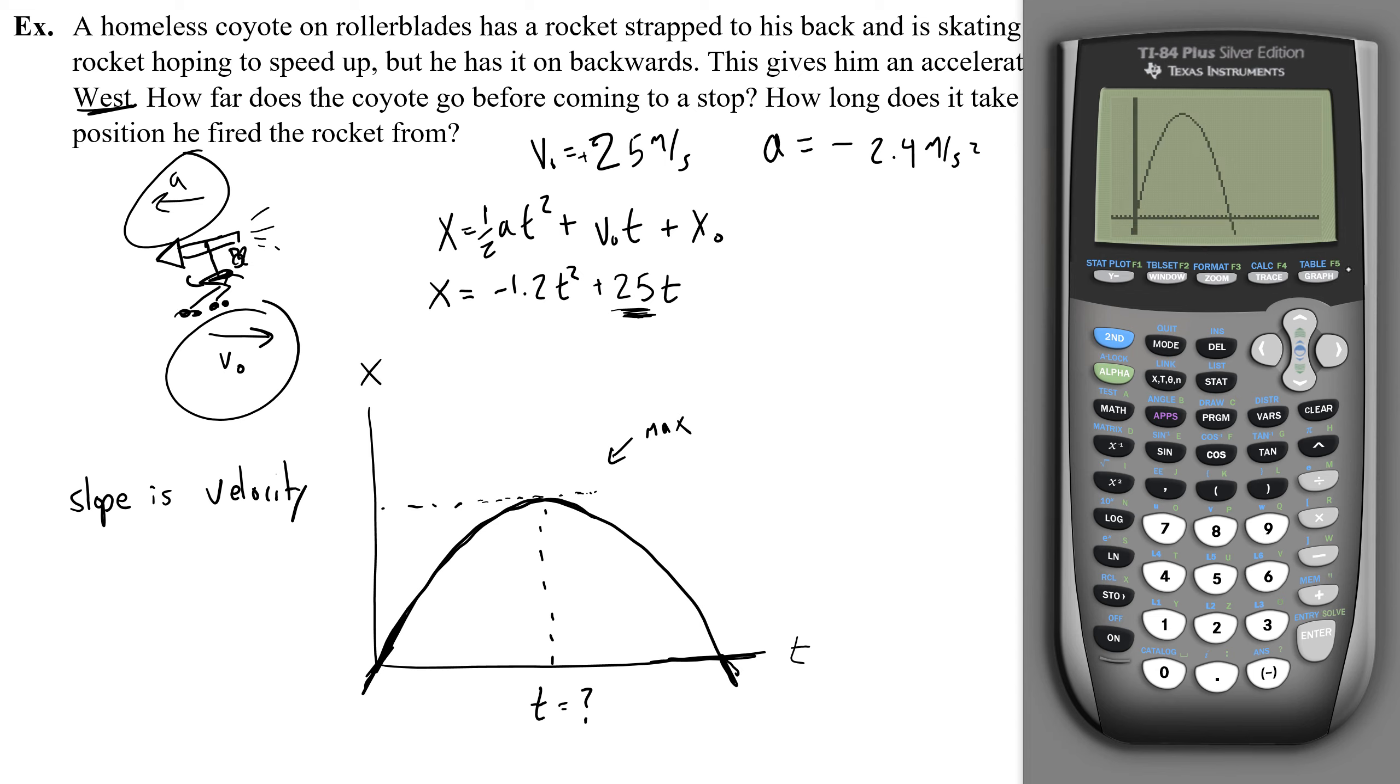So to find the maximum, you would go to second, trace, down to maximum. Okay, now you go to the left of where that maximum is, then to the right of that maximum. Guess, and boom. Now you know that the maximum distance traveled, where the slope is zero and therefore the velocity is zero, so the coyote has come to a stop. This occurs at x equals 10.4, so that's the time, 10.4 seconds,